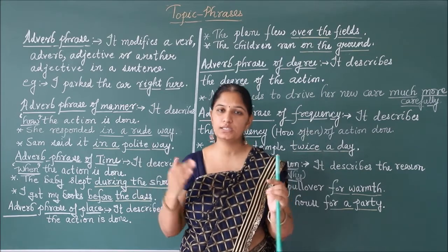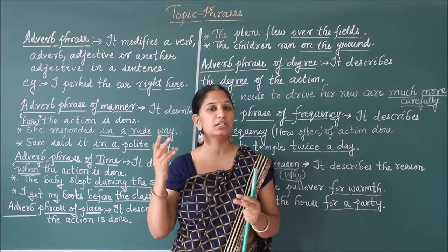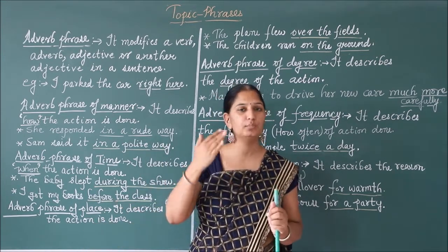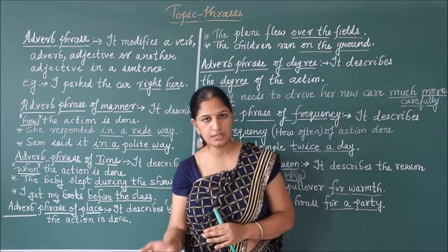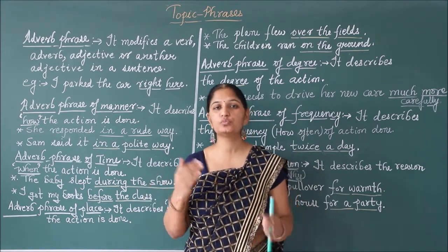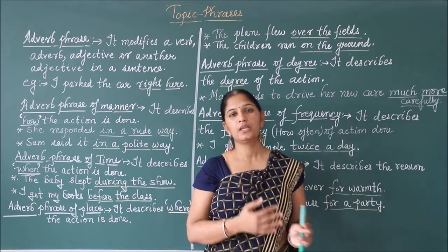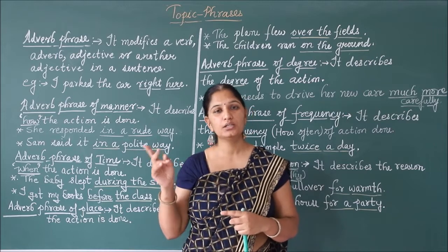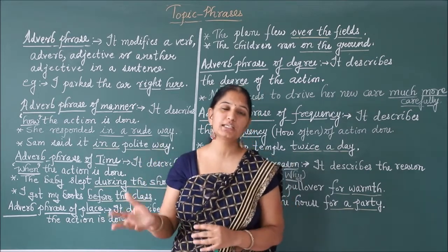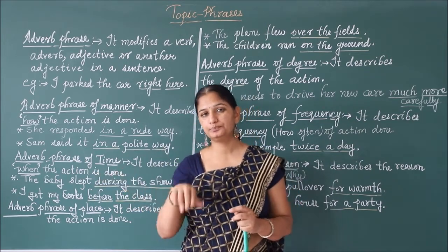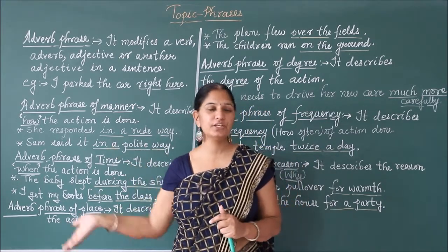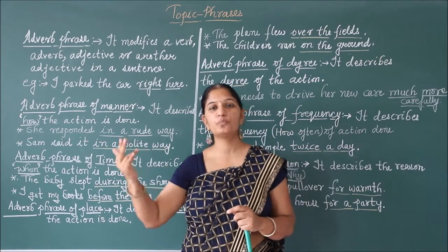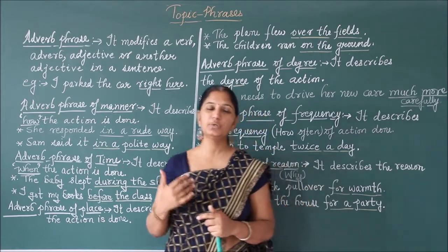For example: 'Playing computer games is his favorite pastime.' What is his favorite pastime? Playing computer games. These three words act as the subject of the sentence, and since subject is always a noun or pronoun, it becomes a noun phrase. Then adjective phrases are groups of words which describe a noun. For example: 'He is the soldier free from fear.' Here 'soldier' is the noun and 'free from fear' is the phrase describing it — so it becomes an adjective phrase.